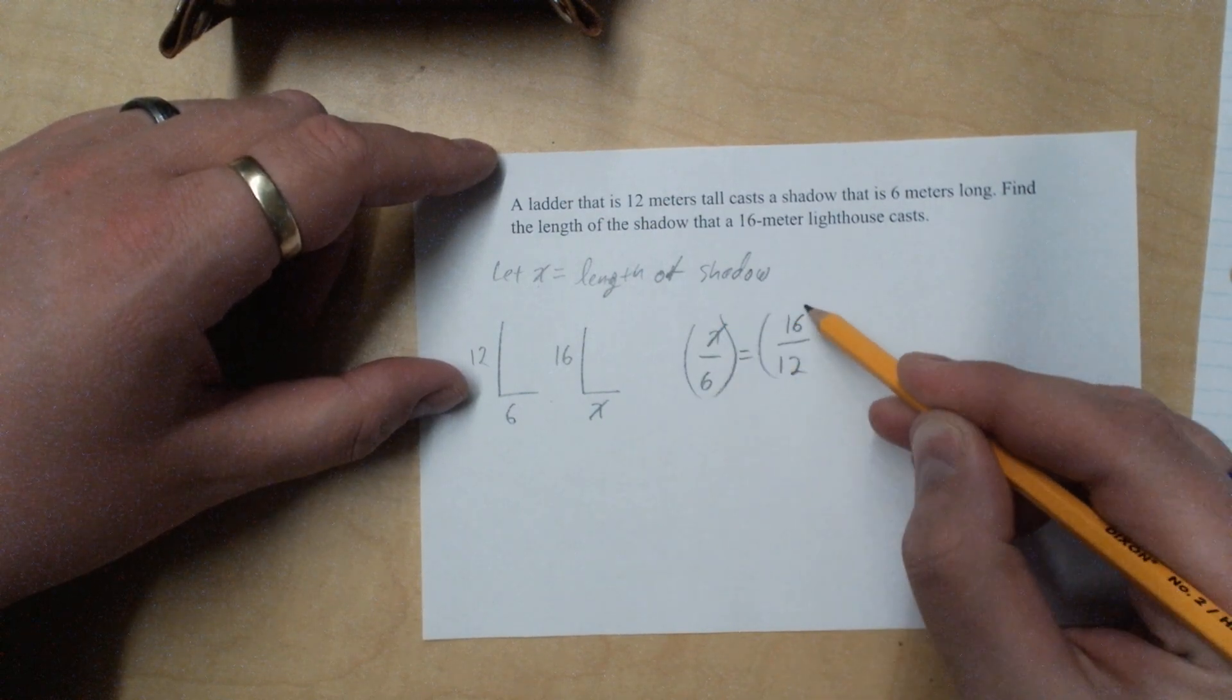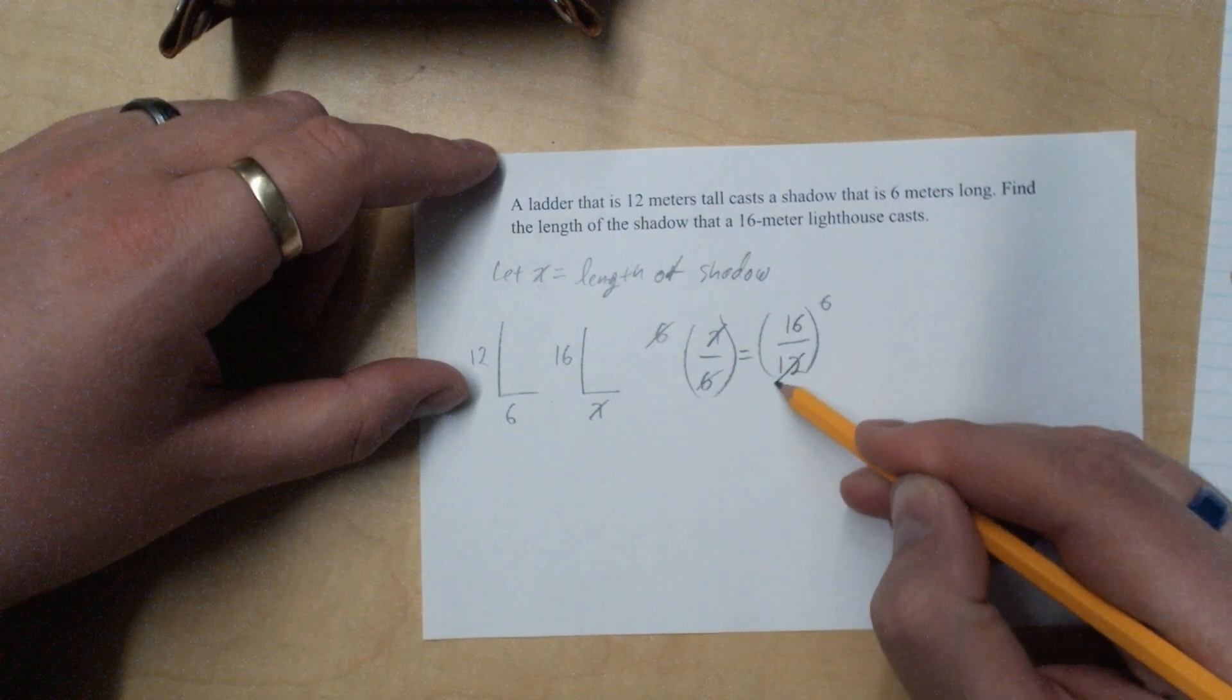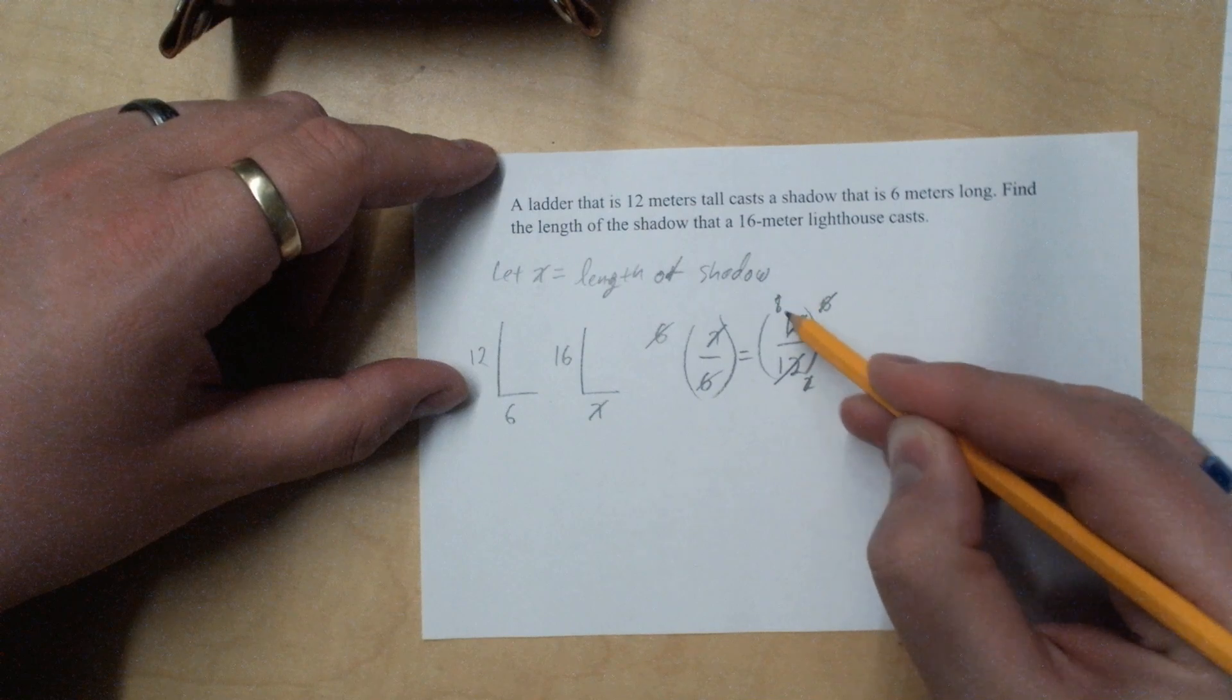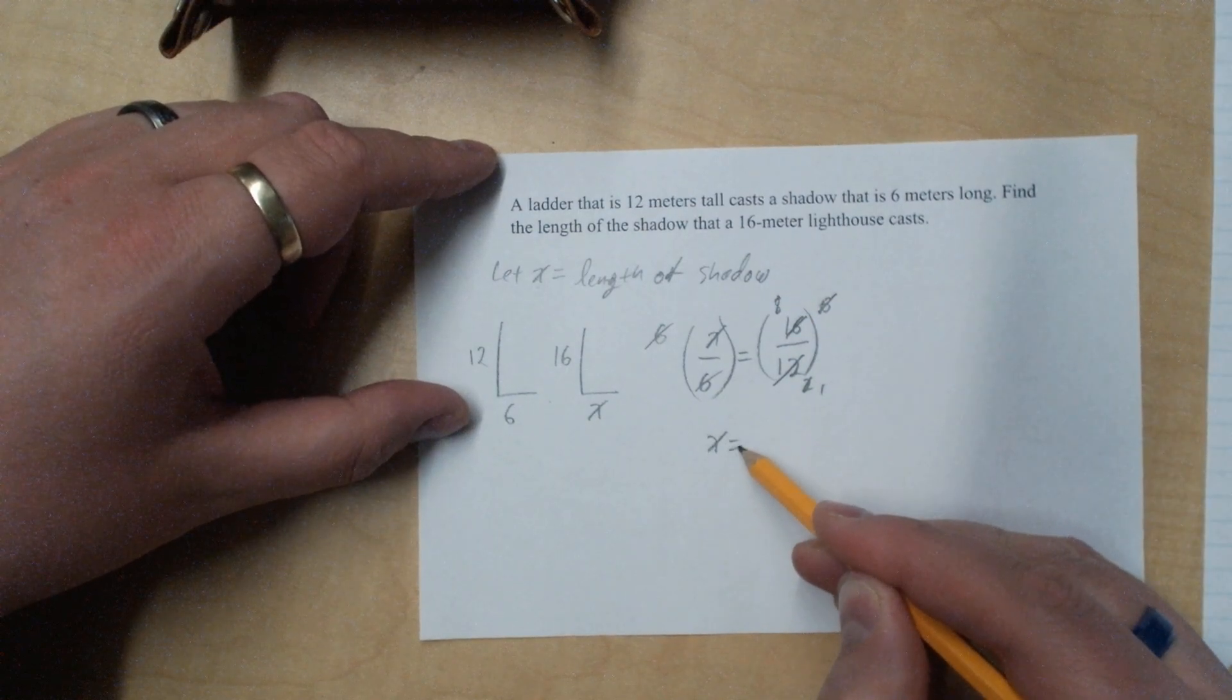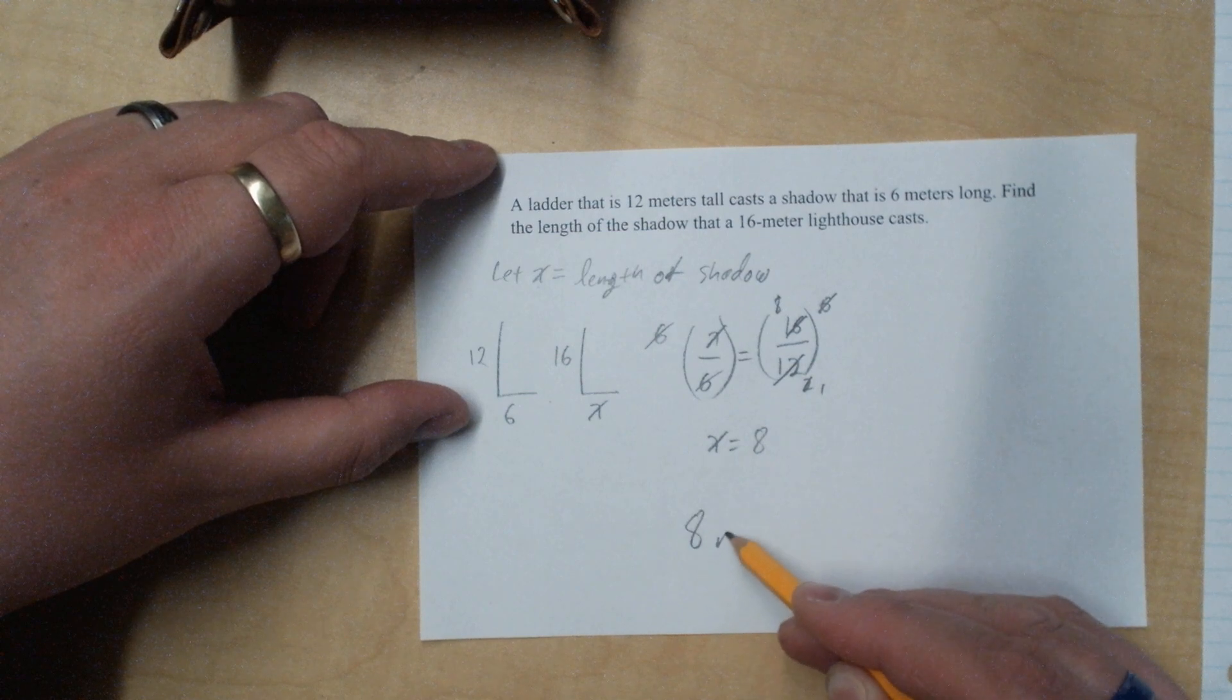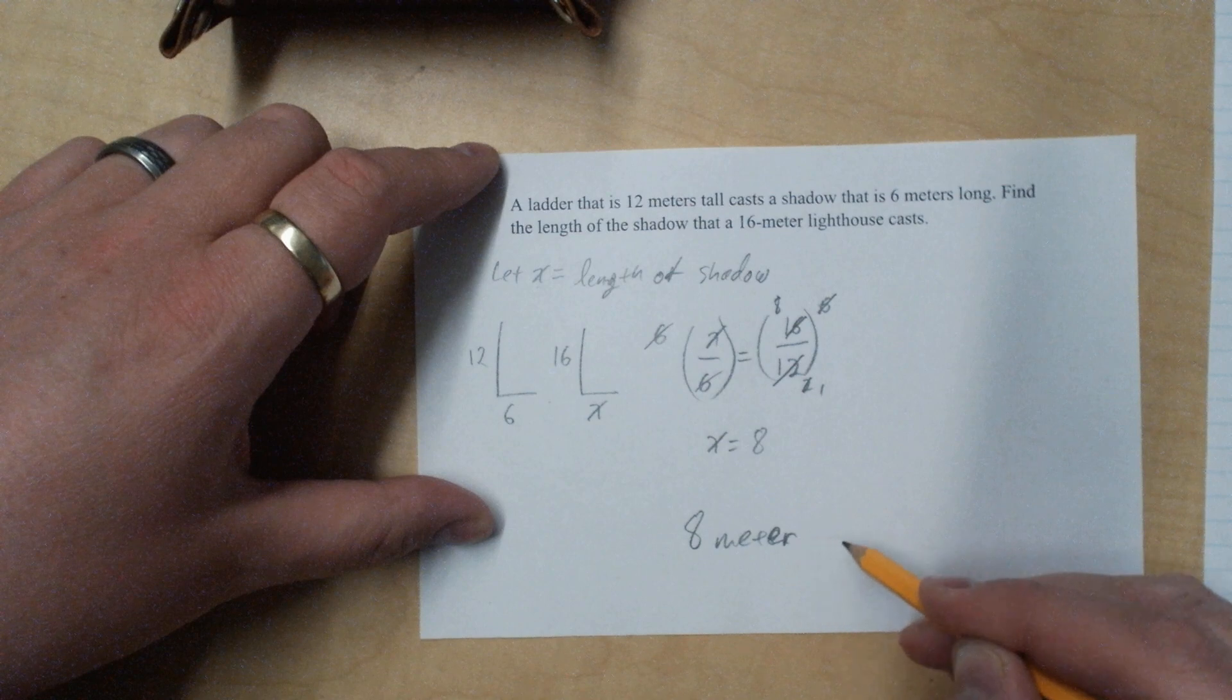I'm going to multiply everything by 6. These cancel out, these reduce, 8 and 1. So x equals 8, 8 meter shadow.